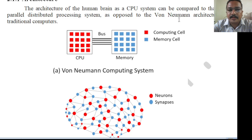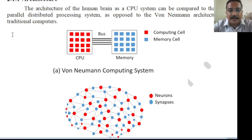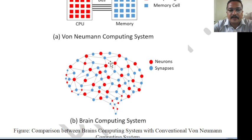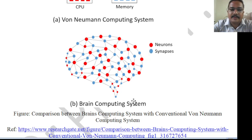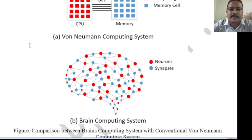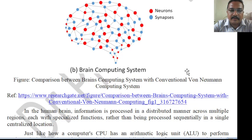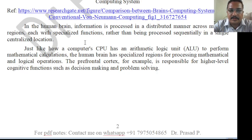The architecture of a CPU and the human brain can be compared. A schematic representation of a traditional computer architecture and a brain computing system is shown here, taken from research reference material. The CPU and computing cell memory system, as well as the brain system, are represented to give a proper idea about how each works. In the human brain, information is processed in a distributed manner across multiple regions.